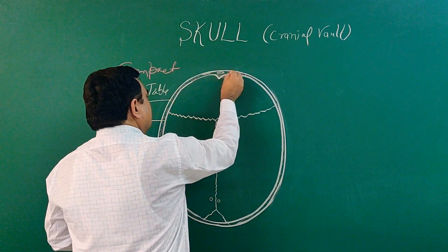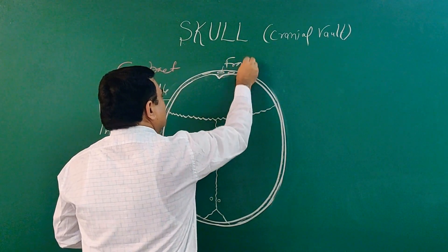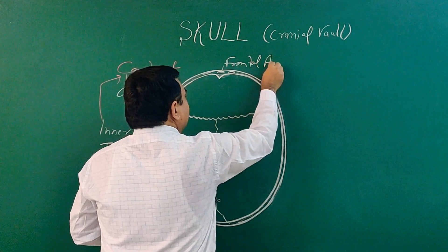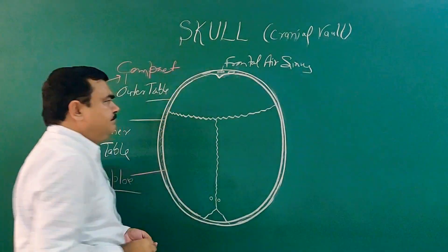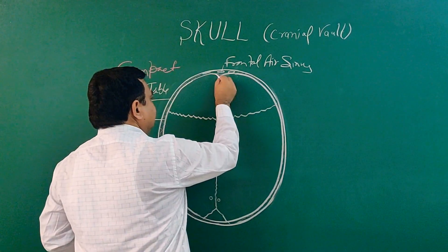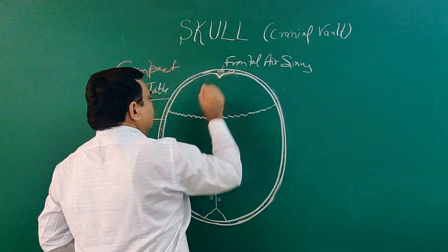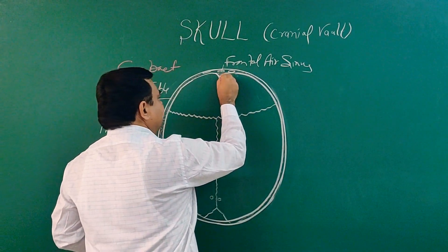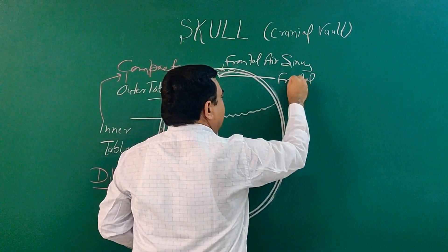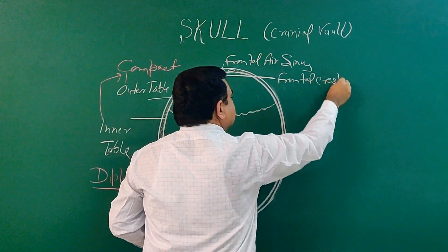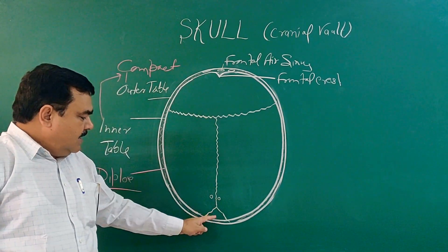Looking from the anterior side, here is the frontal air sinus within the frontal bone, and this is the frontal crest.